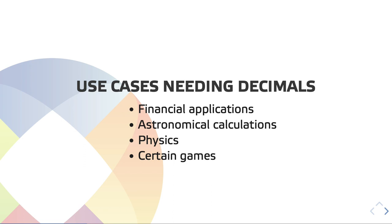Which kind of use cases would we need decimals and not just numbers? For financial applications, those roundings, if they get out of control, can actually cause a lot of losses for people using those applications. There are also applications that would like to do precise calculations, like astronomical calculations in physics. And certain games, if they would like to be close to reality, would also want to use decimals instead of binary float numbers.